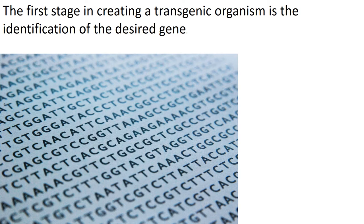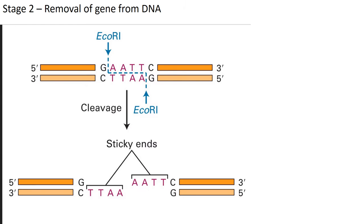Stage two: we need to cut the gene from the donor DNA. There's a very special enzyme called a restriction enzyme, and this cuts at a precise DNA location. This one is called EcoR1, and it cuts at the AATTC section here.